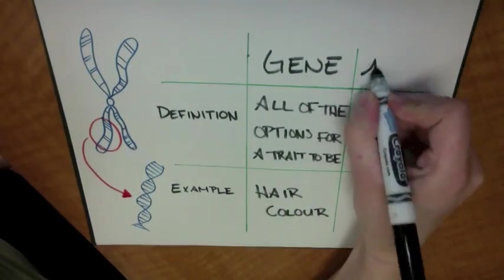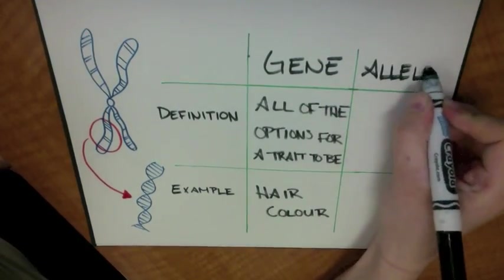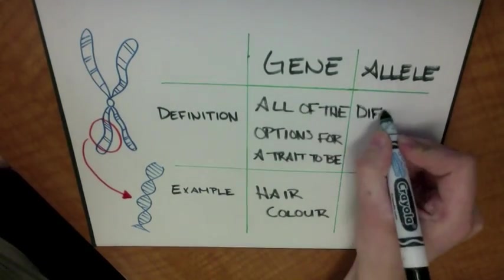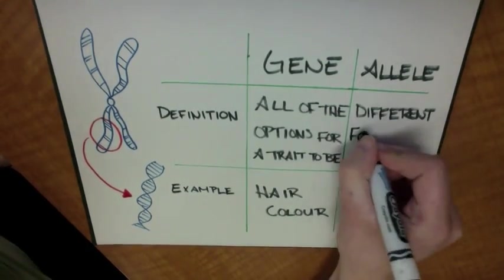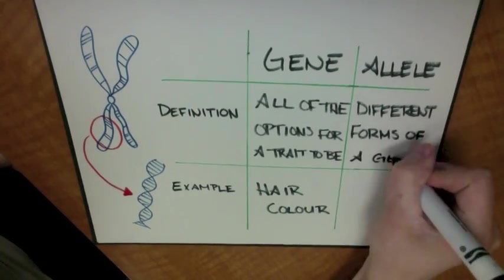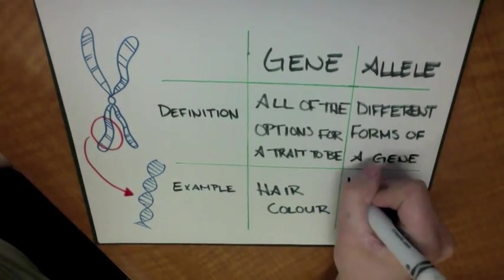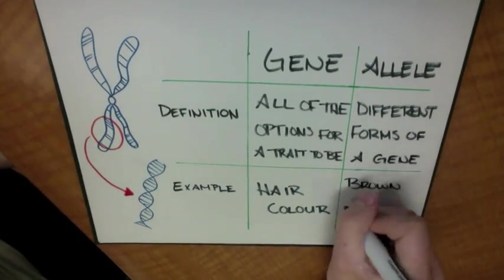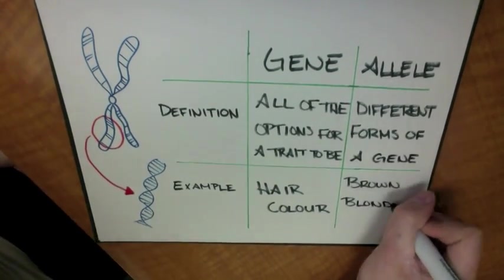What is an allele? Alleles are the traits you have. Alleles are different types of the same gene, like brown and blonde hair.